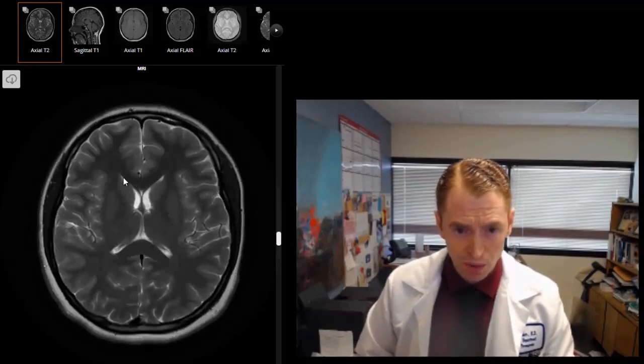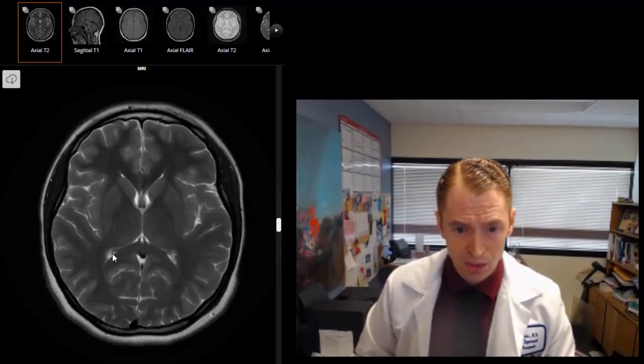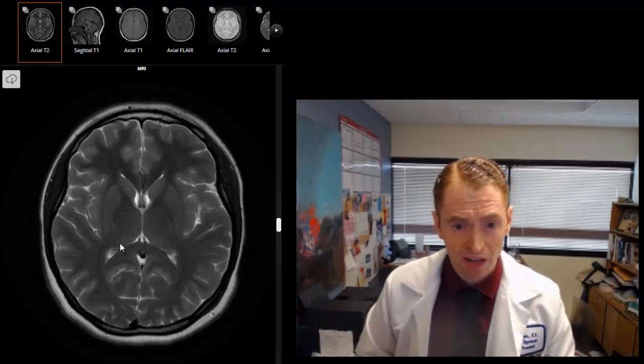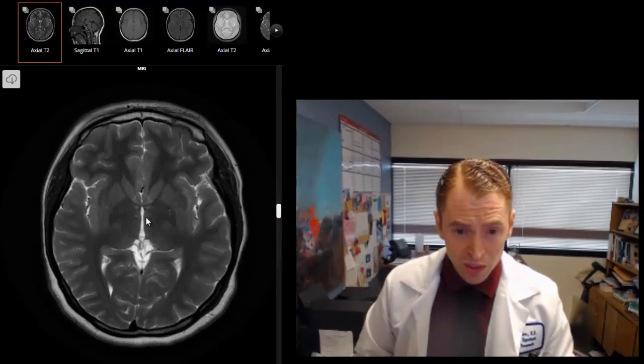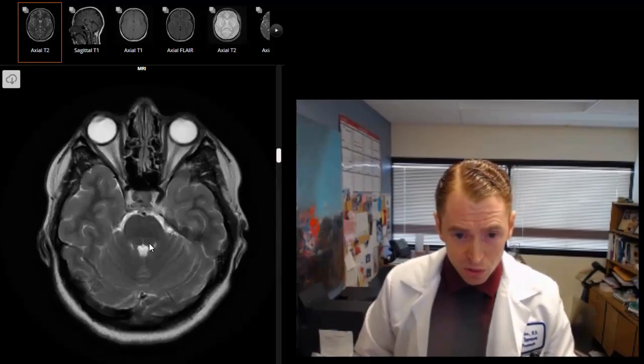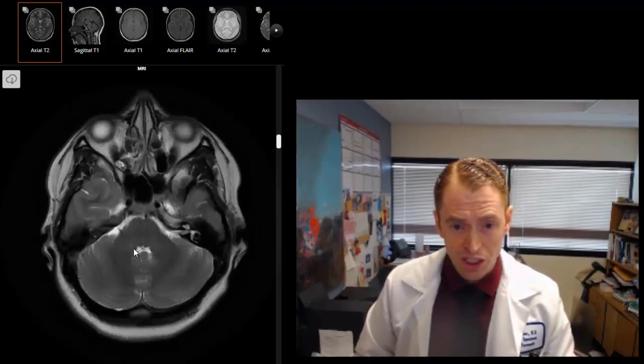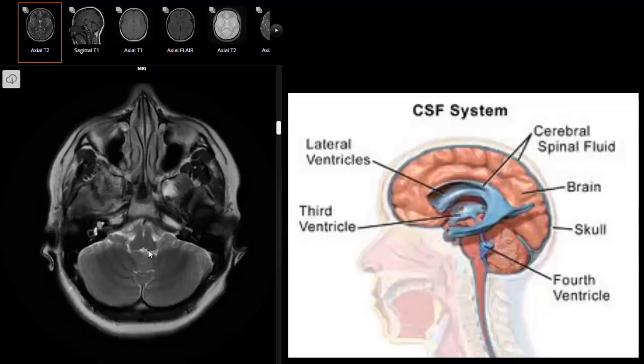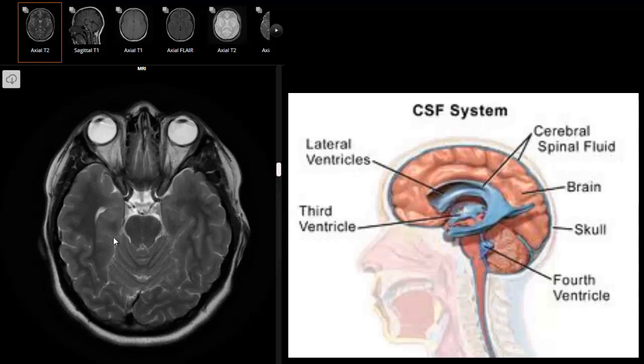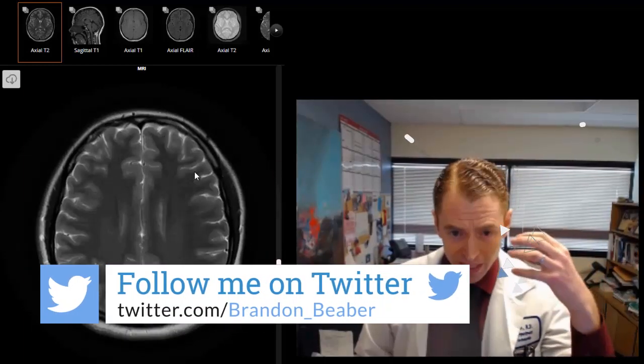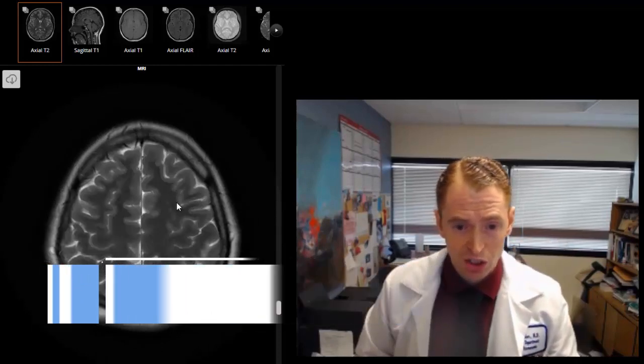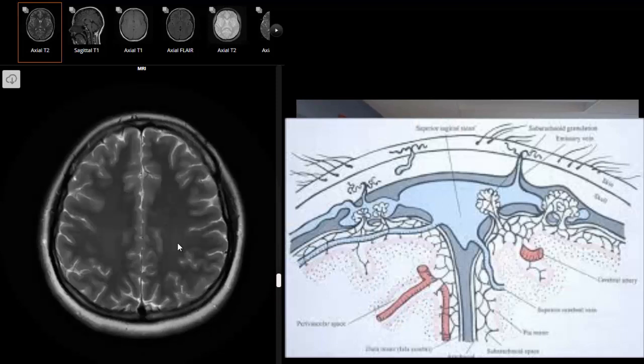If we look at the cerebrospinal fluid, these are the lateral ventricles. Within these lateral ventricles are the choroid plexus, which is a little bit difficult to see, which is where the cerebrospinal fluid is made. This cerebrospinal fluid flows through the interventricular foramen of Monro into the third ventricle, which is here. Then through the cerebral aqueduct into the fourth ventricle, which is here. Then it moves through the middle and lateral apertures and gets into all of the subarachnoid spaces all over the surface of the brain.